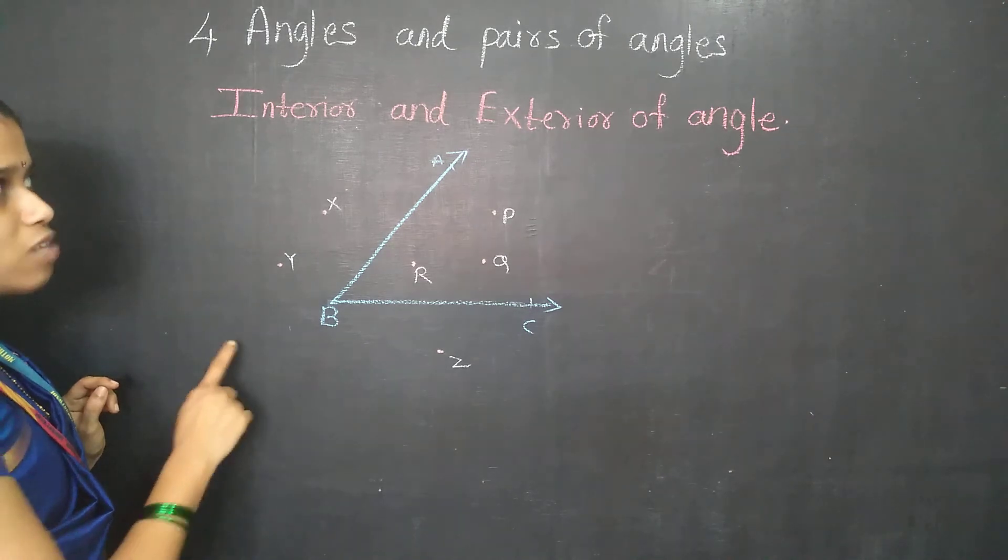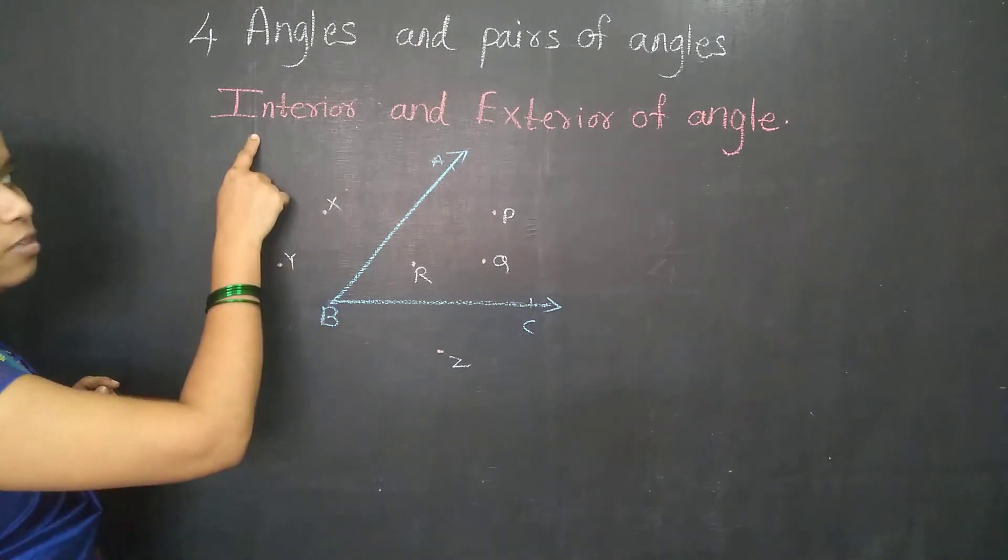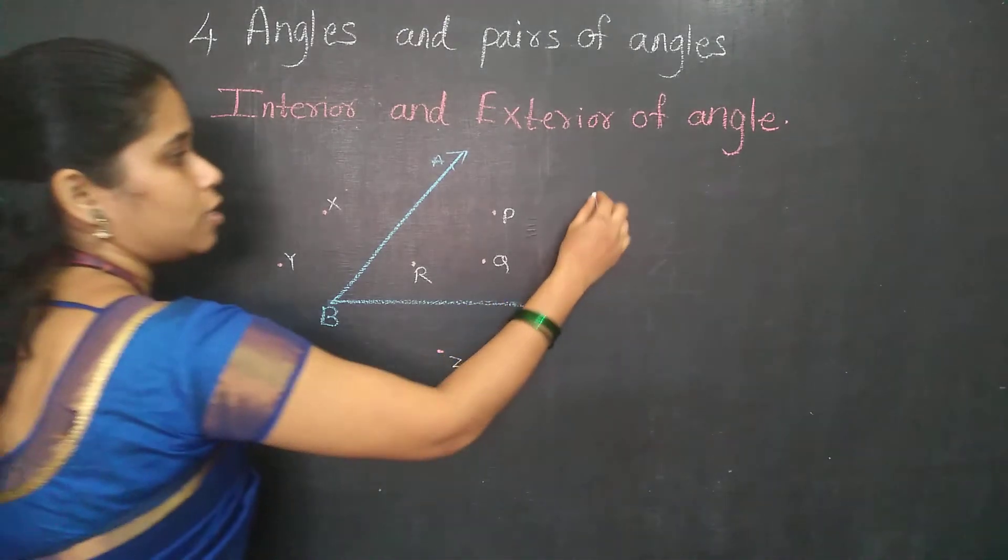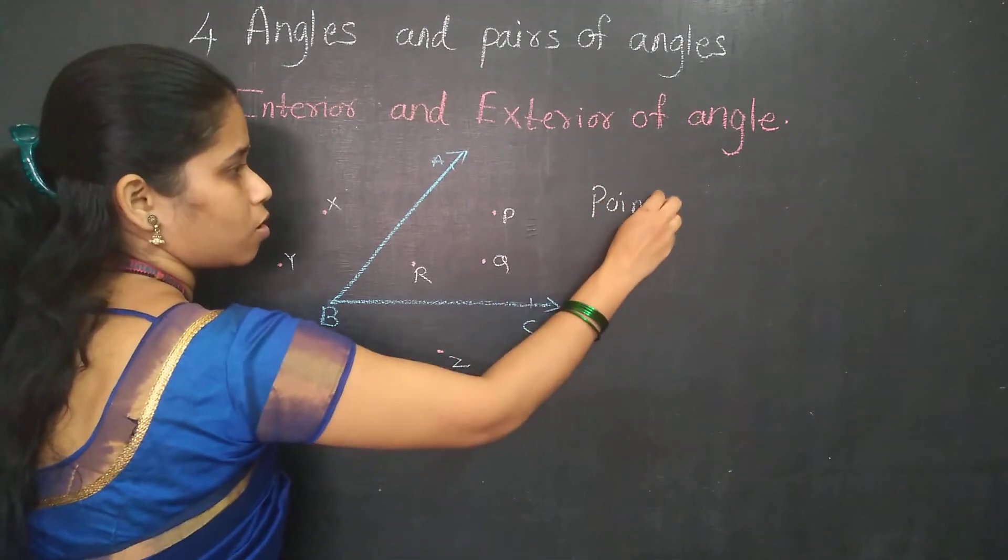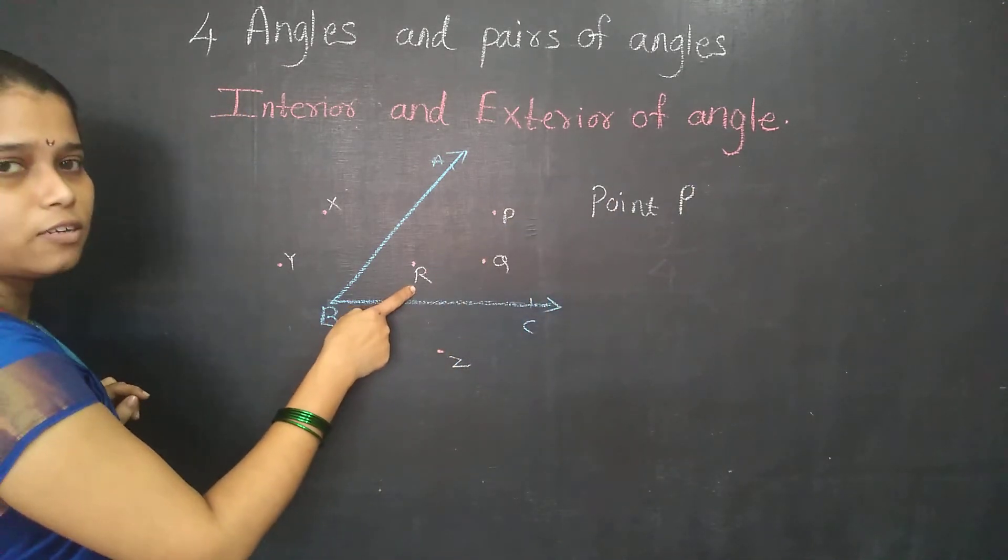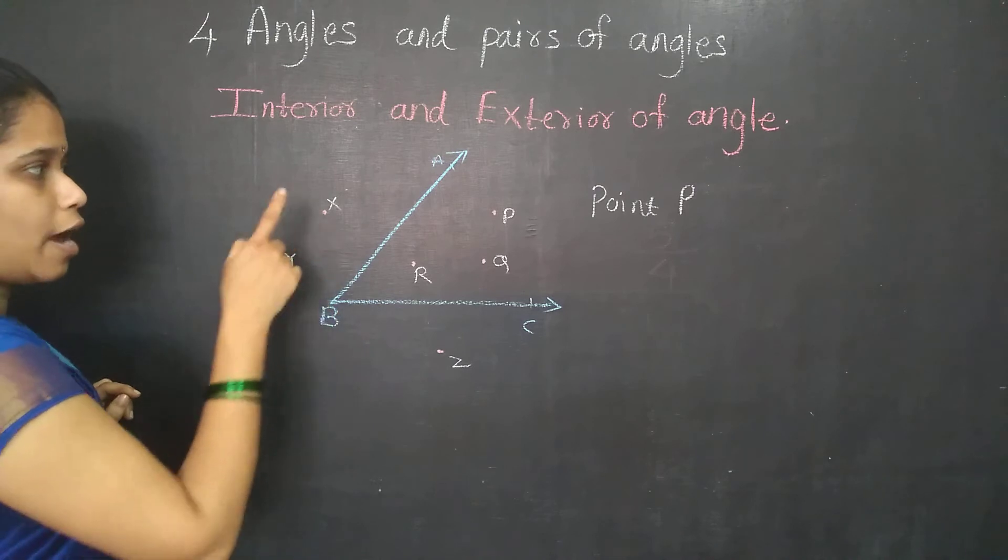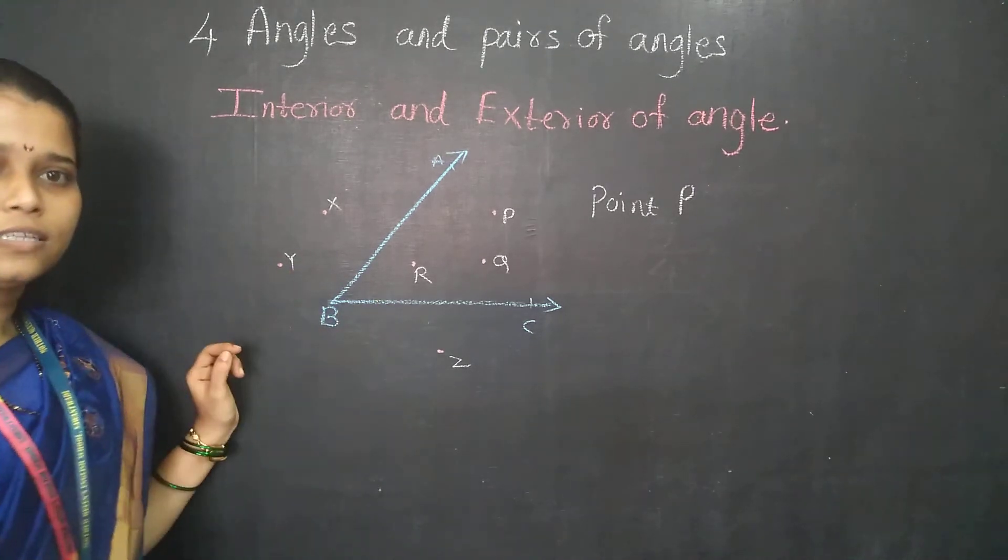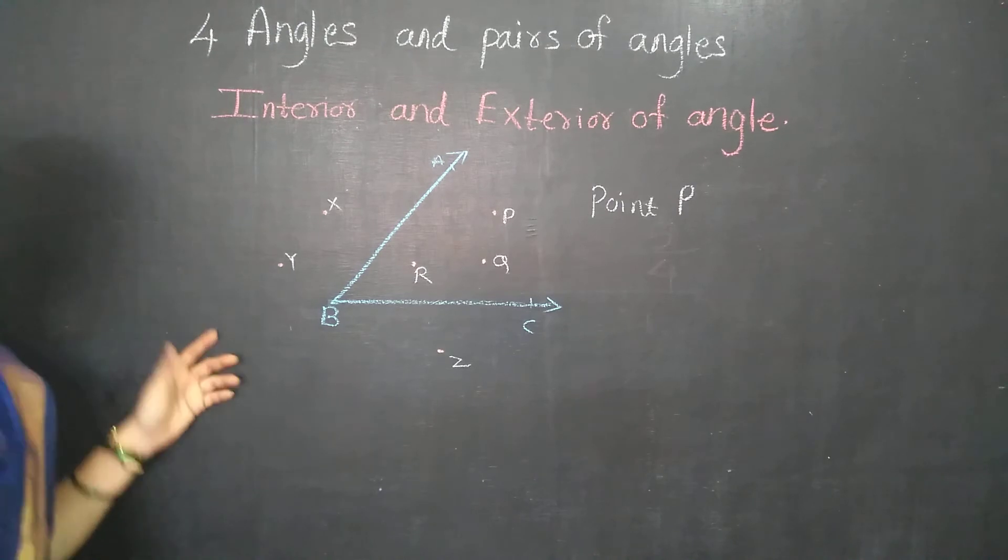So if they tell you to write the points in the interior of the angle, what should I write? There is point P, point Q and point R. They are in the interior of the angle. And point X, point Y and point Z are in the exterior of the angle.